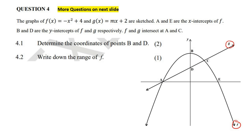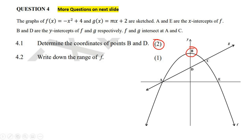A and E are the X-intercepts of F, and B and D are the Y-intercepts. So for the first question, for two marks, it says determine the coordinates of B and D. Have a look at B — that is the Y-intercept of the graph of F.